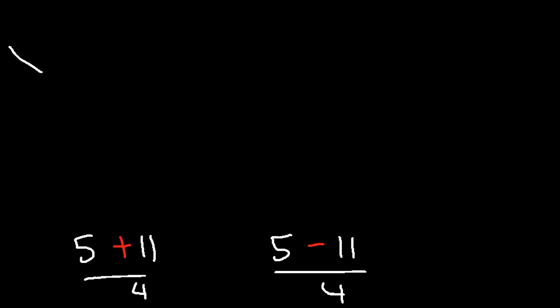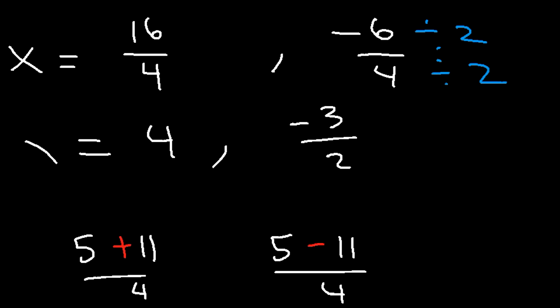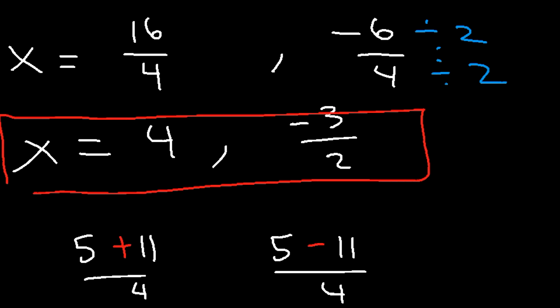5 plus 11 is 16, and 5 minus 11 is negative 6. 16 divided by 4 is 4. For negative 6 divided by 4, we can reduce it — both numbers are even, so divide by 2: negative 6 divided by 2 is negative 3, and 4 divided by 2 is 2. So x is equal to 4 and x is equal to negative 3 over 2. That's the solution to the equation.